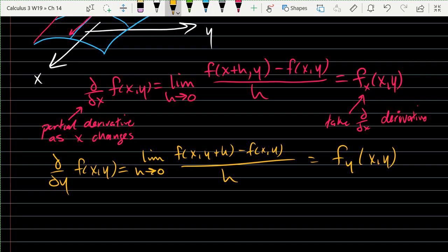So, our derivative notation is F subscript Y, and we're changing the Y coordinate so you get F of x, y plus h minus f of x, y divided by h. So that's your difference quotient.